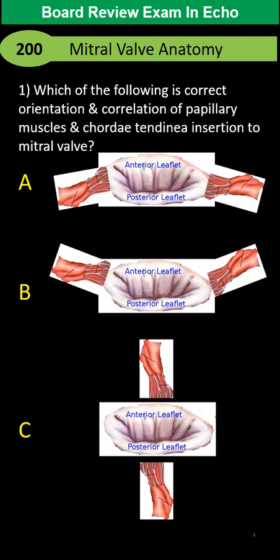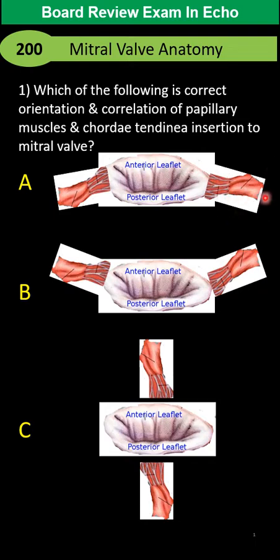First question: which of the following is correct? Orientation and correlation of papillary muscle, as you can see, related to the anterior mitral valve and posterior mitral valve leaflet. As imagined here, is this an atrial or cephalic view? Here is the ventricular view. So where is the location and insertion of the mitral valve commissure, chordae tendineae, and papillary muscle related to those two mitral valve leaflets?